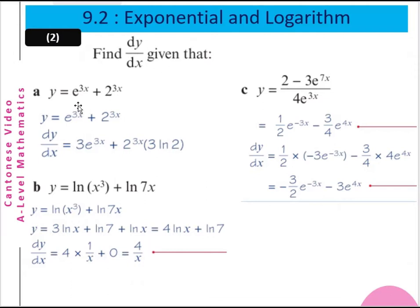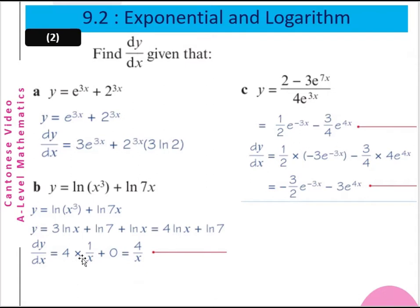Example 2: find the derivative of y equals e³ˣ plus 2³ˣ. So dy/dx equals 3e to the 3x plus 2 to the 3x · 3·log 2. Then for y equals 3·log x plus log 7x, we simplify: y equals 3·log x plus log 7x equals 4·log x plus log 7. So dy/dx equals 4 times 1/x plus 0.